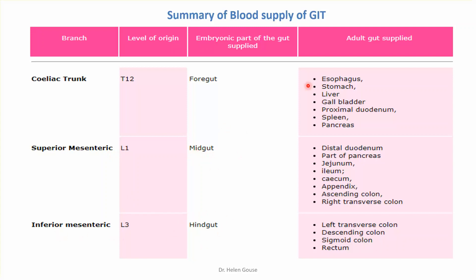The organs of the foregut are the esophagus, stomach, liver, gallbladder, proximal duodenum, spleen, and pancreas.